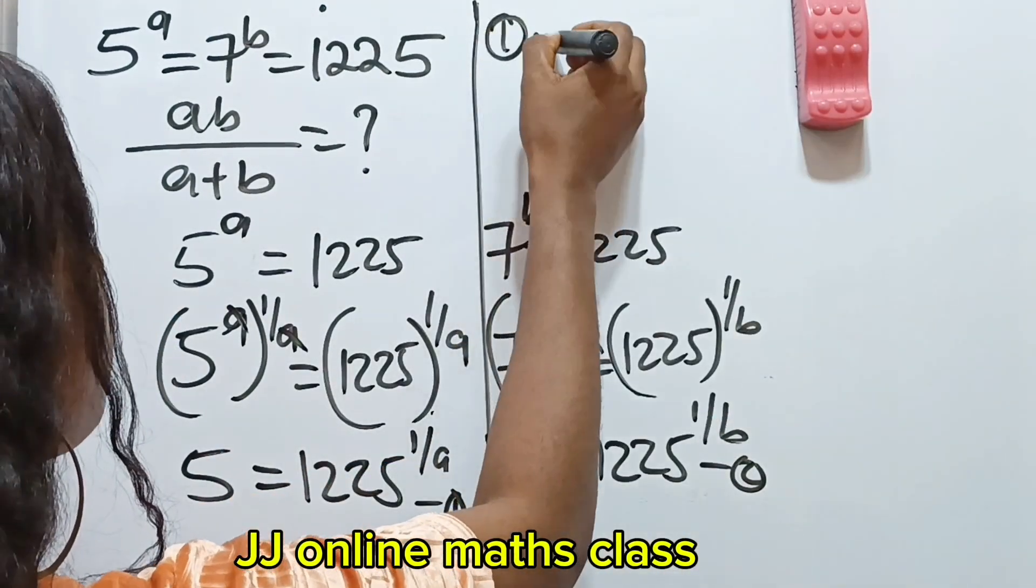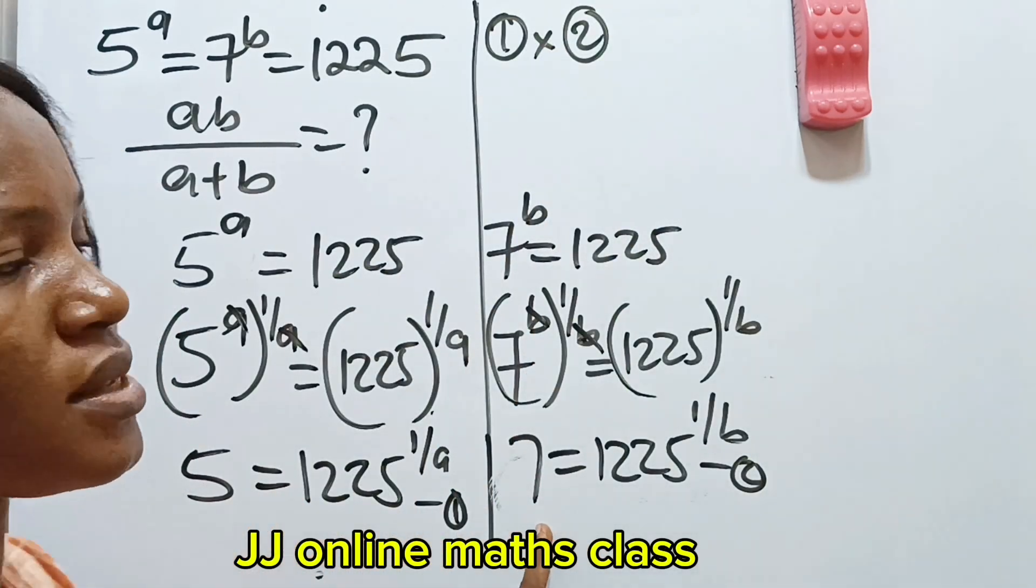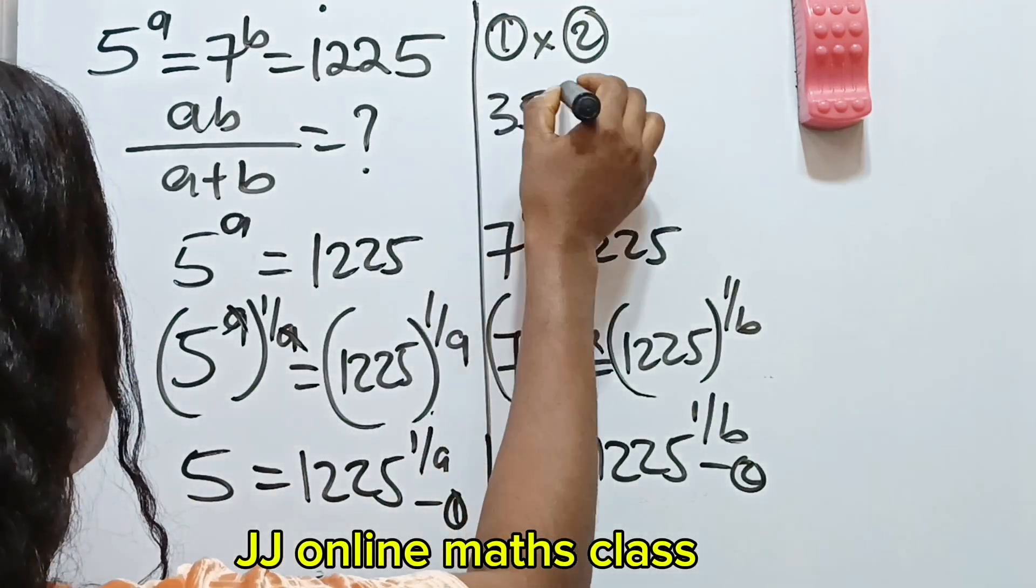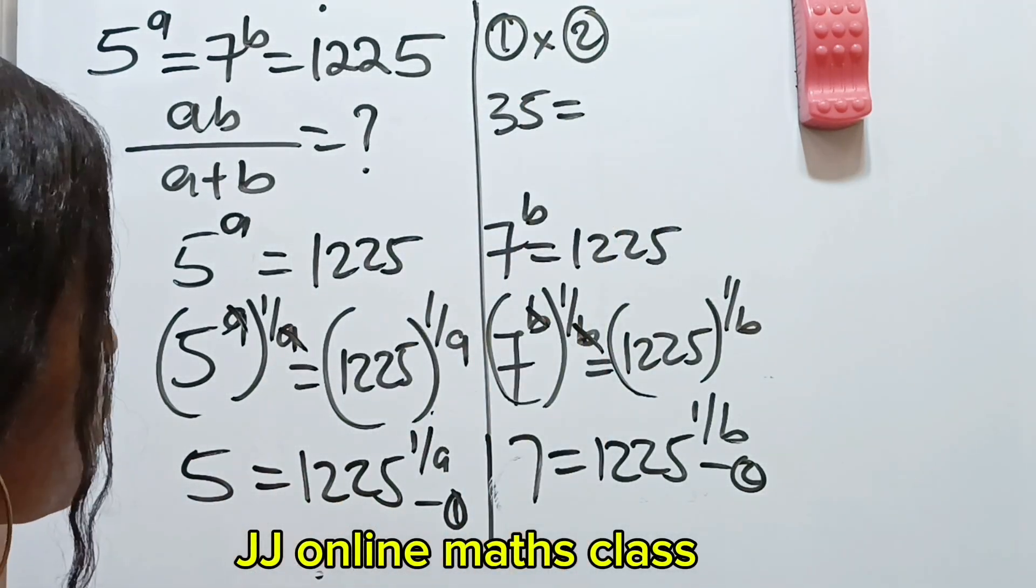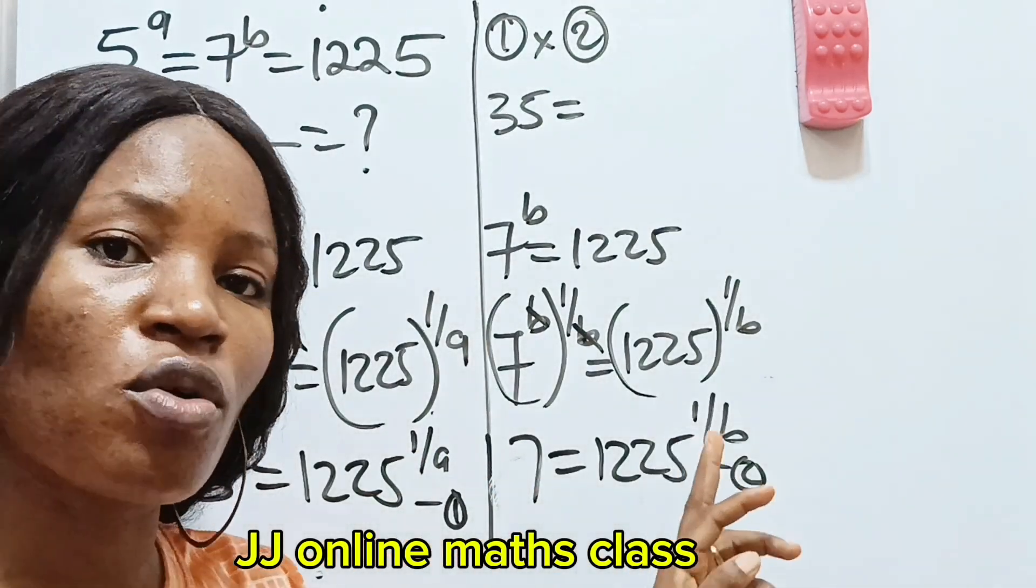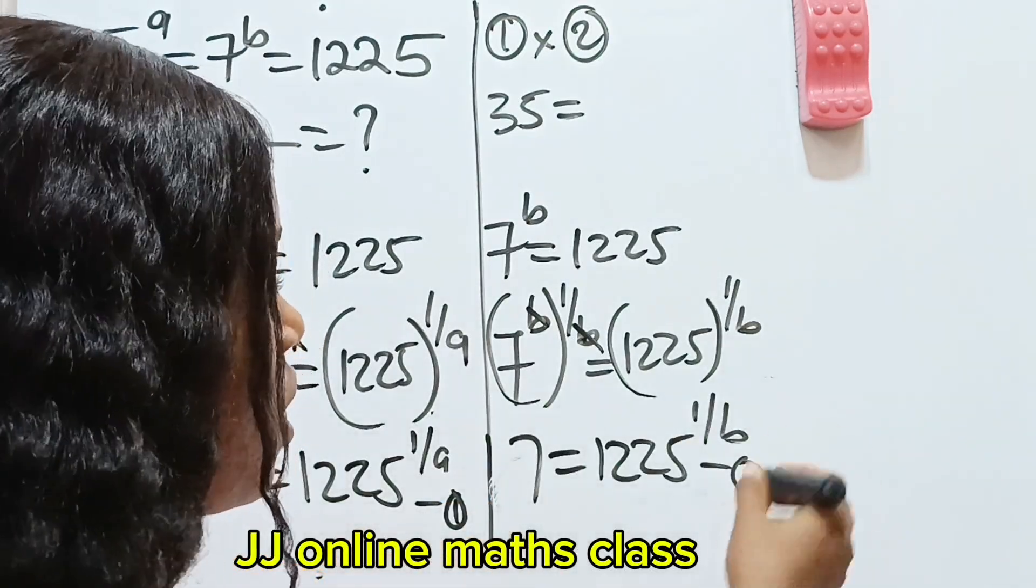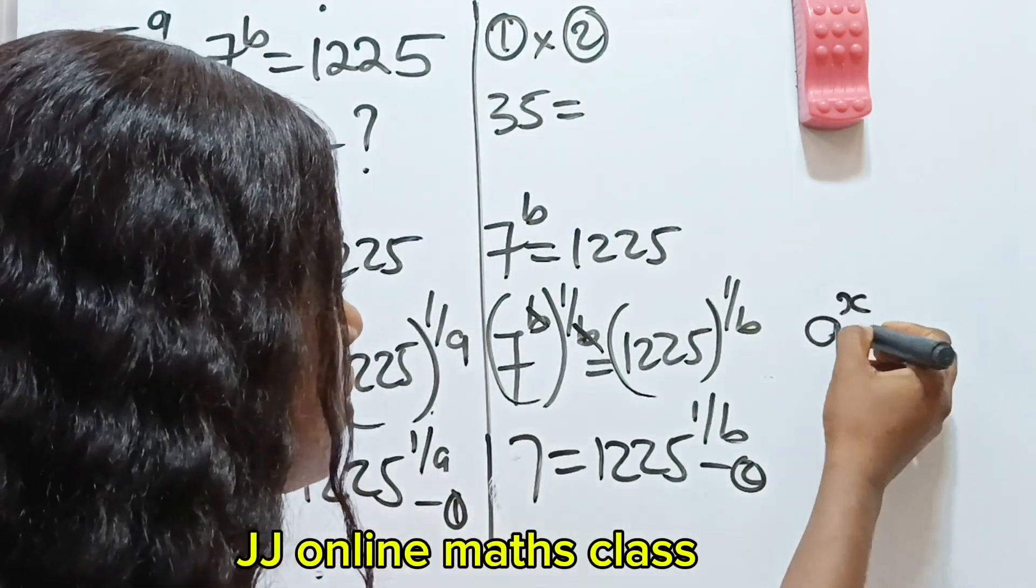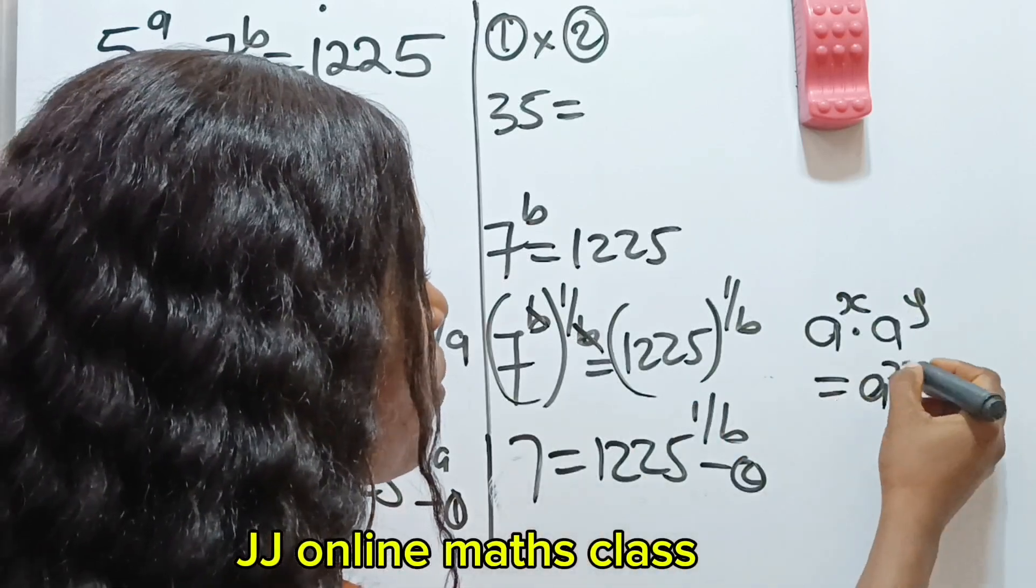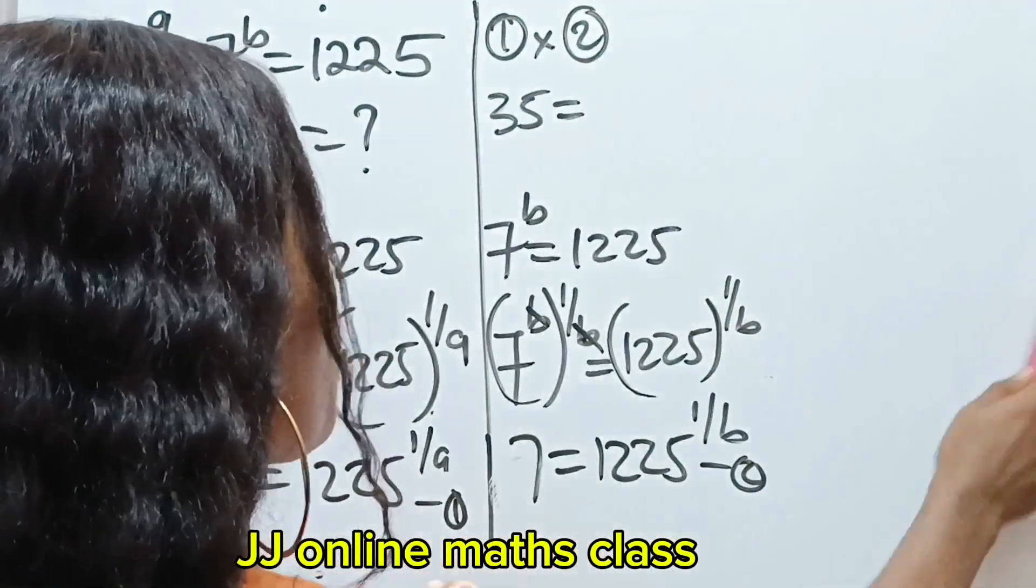So equation 1 multiplied by equation 2, we will have equation 1 is 5 times 7, right? 5 times 7, which will give us 35, is equal to 1225 raised to the power of 1 over a, multiplied by 1225 raised to the power of 1 over b. Now, we have the same base here. So according to the law of indices, when you have a to the power of x multiplied by a to the power of y, it's the same thing as a to the power of x plus y. So you add the powers together and pick one base.